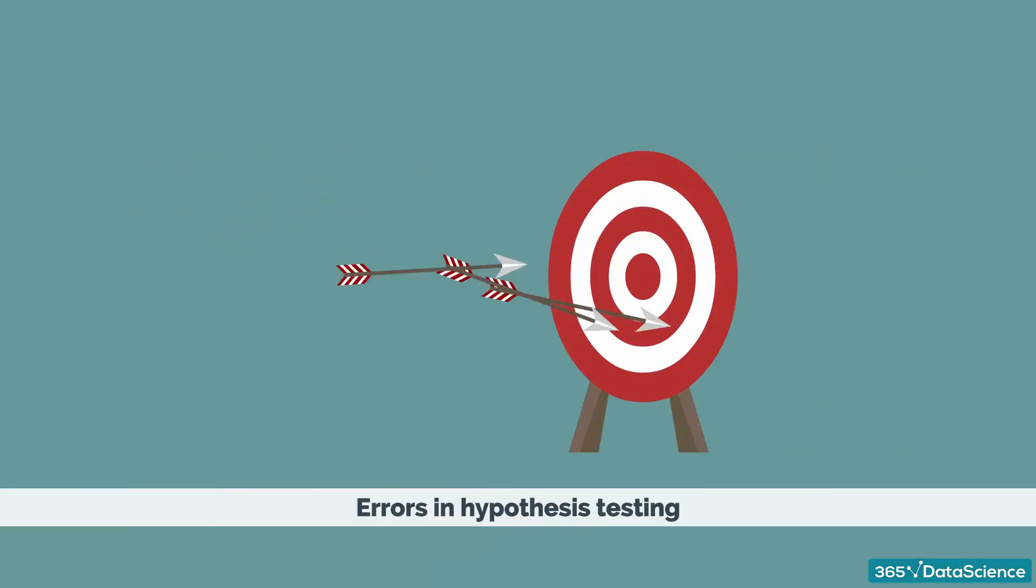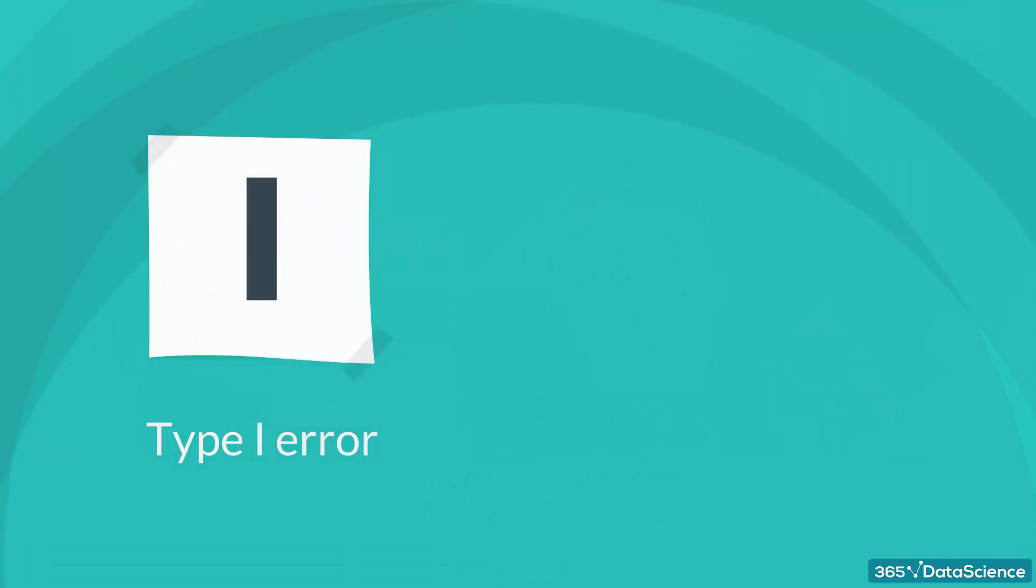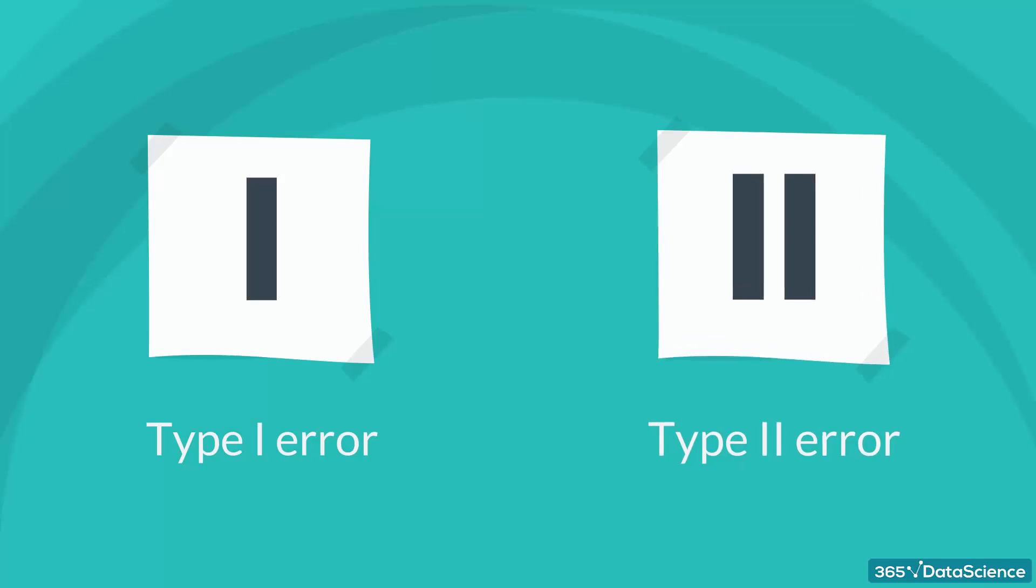In this lesson, we will learn about the errors that can be made in hypothesis testing. In general, we can have two types of errors: type 1 error and type 2 error.